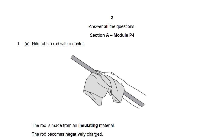Hello, this is an OCR Gateway Physics P4 question on additional science or the OCR Gateway Physics specification. You need to rub the rod with a duster. The rod is made of an insulated material and the rod becomes negatively charged. So when we rub any insulated material, we move negative particles called electrons. They are the only particles that can move, and you need to remember that whilst you answer this question.